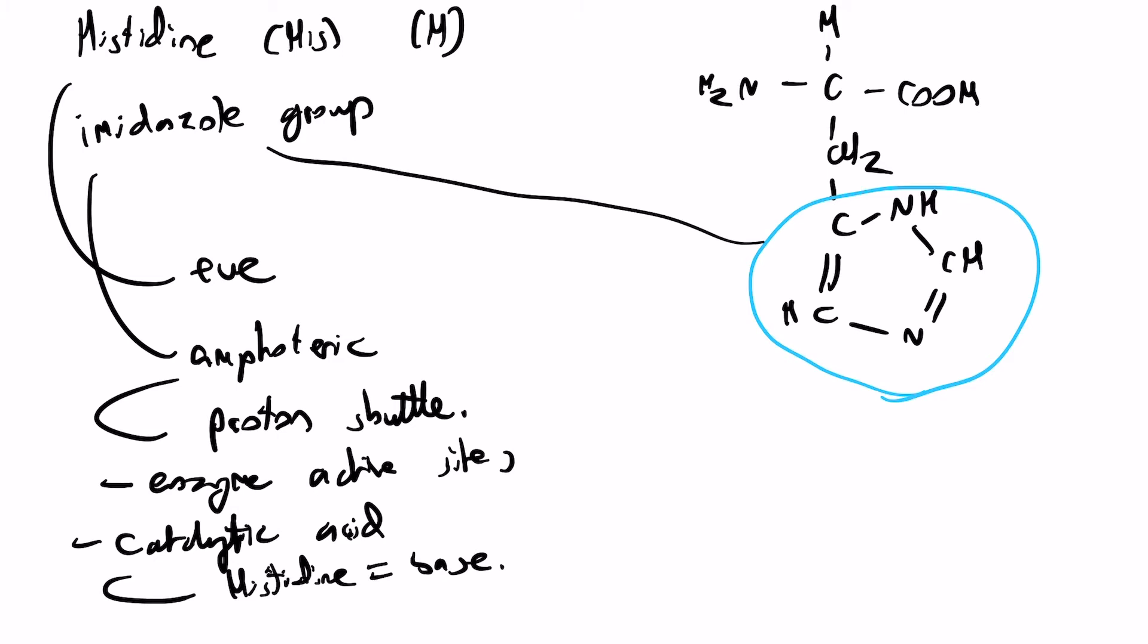So it's an essential amino acid for humans at least. And its codons are basically only two, just CAU and CAC.